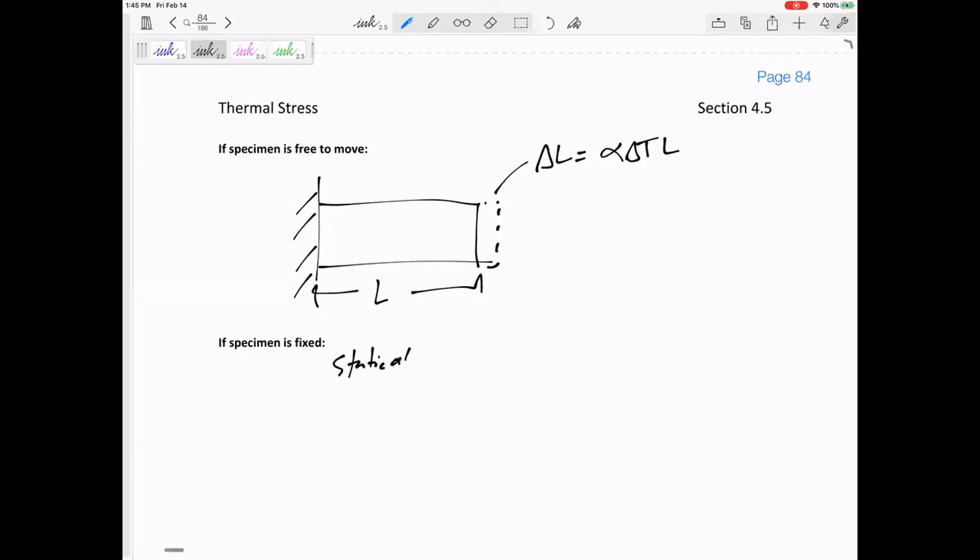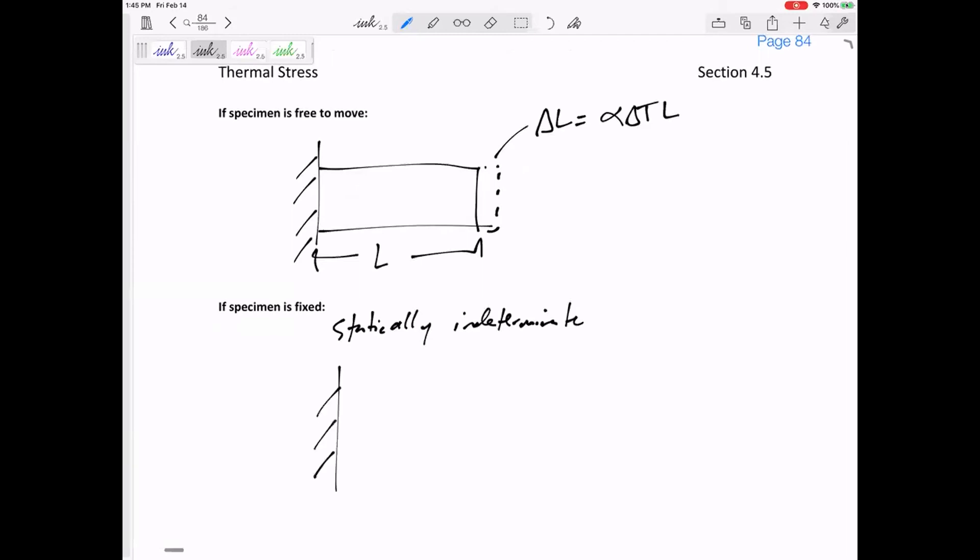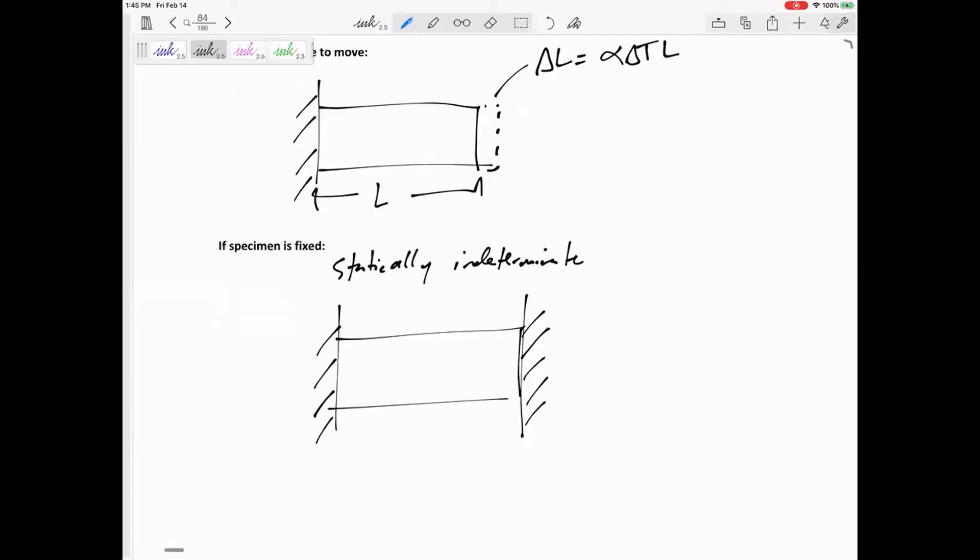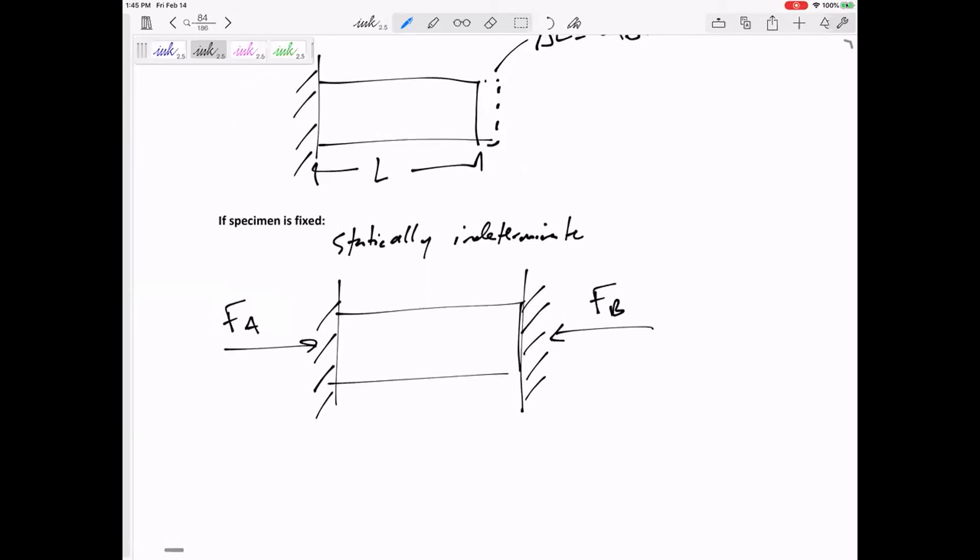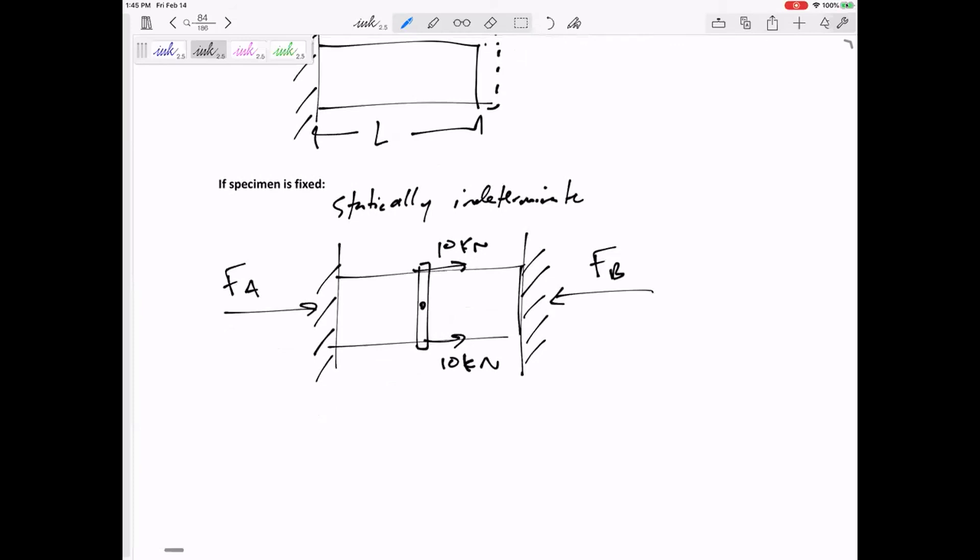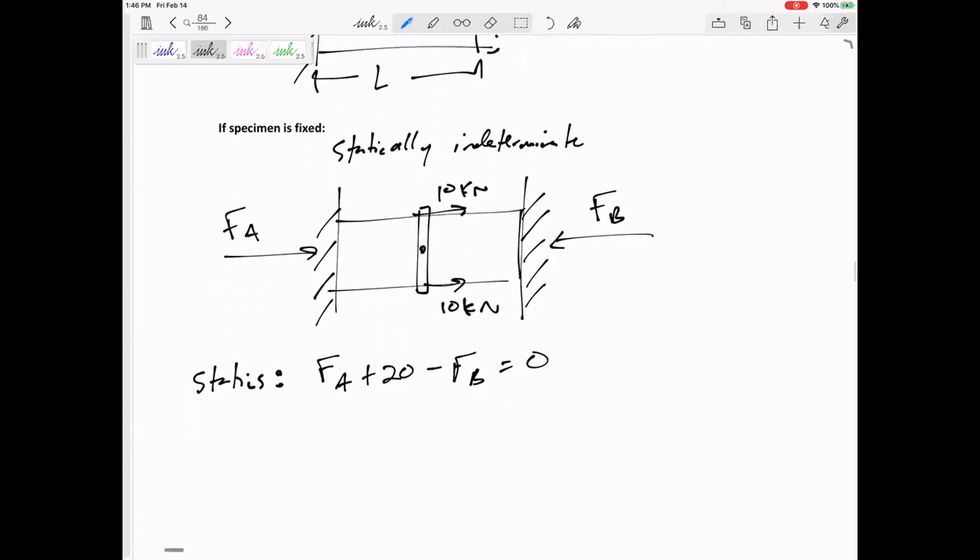But for a statically indeterminate beam, let's say it's fixed between two walls. Maybe we've got FA right here, maybe we've got FB right here. I'm going to put like a 10 kilonewton right there. We still have statics: FA plus 20 minus FB equals zero. But that equation is not enough. I need compatibility.